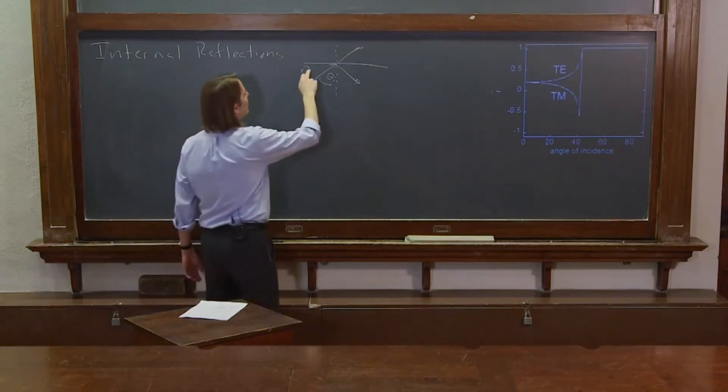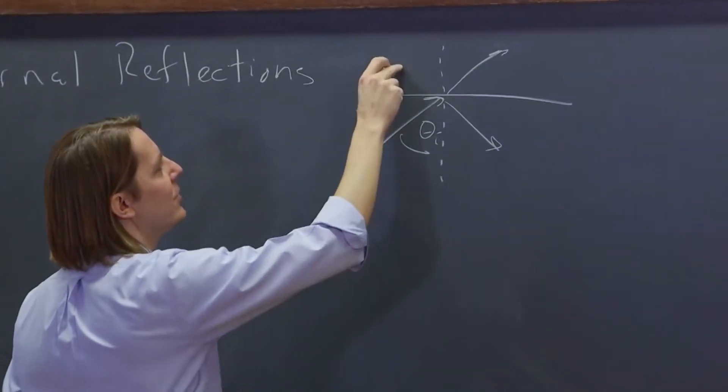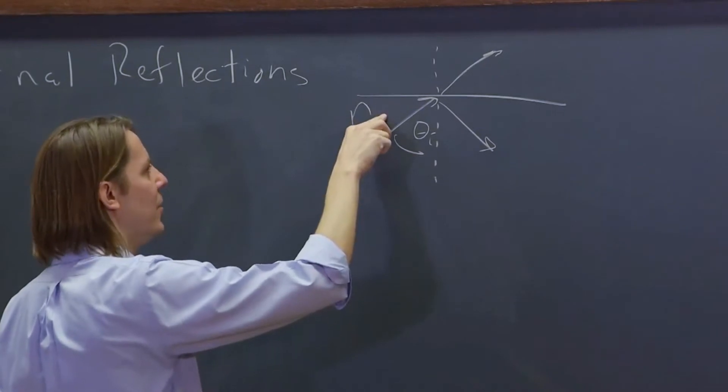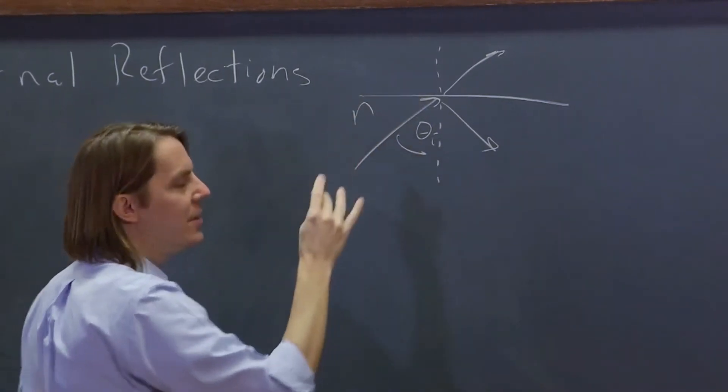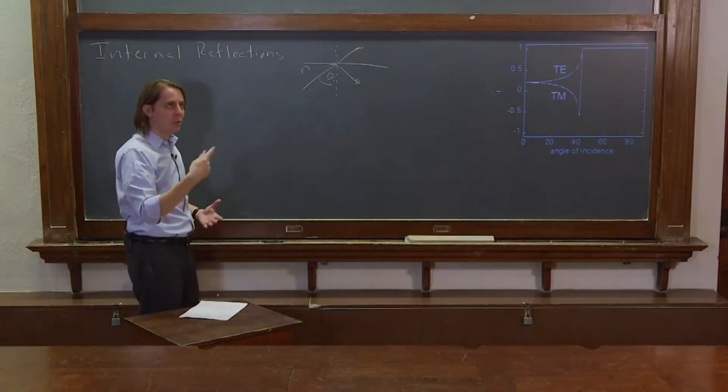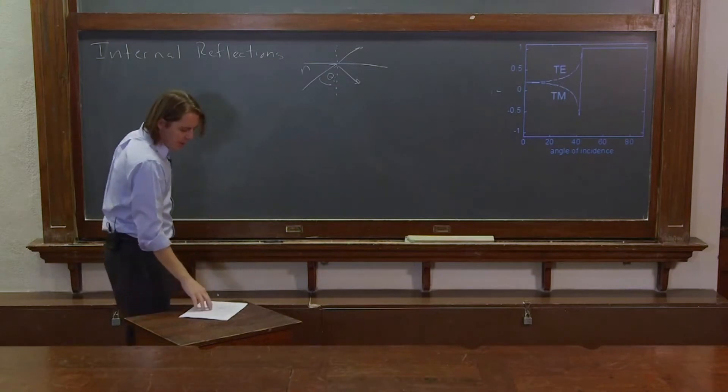But the difference is, here, say this is n equals 1.5 and this is n equals 1 because this is, say, glass and air, then the index you use in the formulas is 1 over 1.5, or about 0.67.